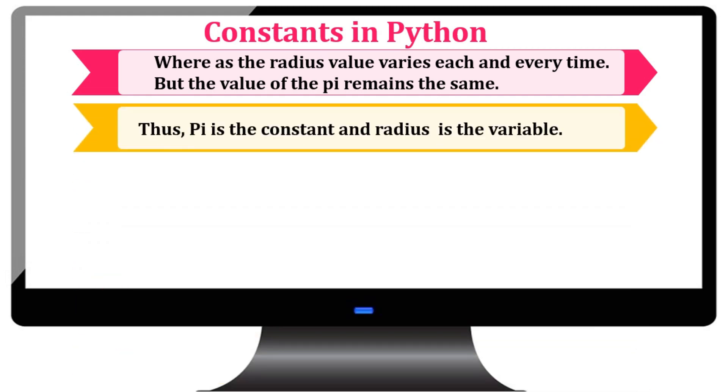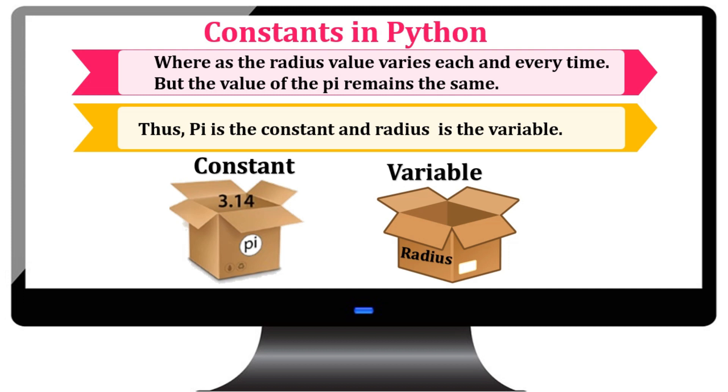Thus, pi is the constant and radius is the variable. I hope now you all will be clear with the concept what is a variable and a constant.